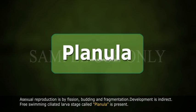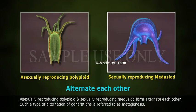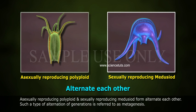Asexual reproduction is by fission, budding, and fragmentation. Development is indirect. A free-swimming, ciliated larval stage called Planula is present. The asexually reproducing polypoid and sexually reproducing medusoid forms alternate with each other. Such alternation of generations is referred to as metagenesis.